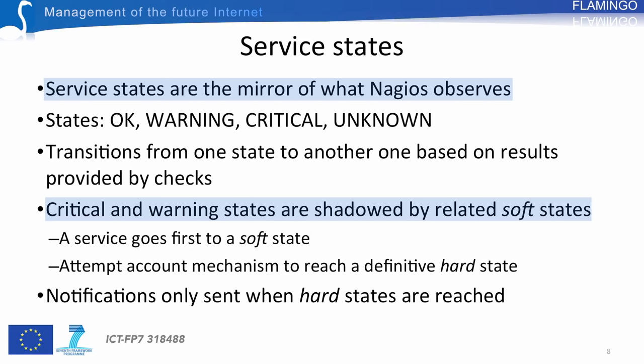This means that several checks are required by the system before considering a service is really in a critical or warning state. So there are two states: a soft state and a hard state. A service goes first to a soft state, and then an attempt count mechanism is used to reach a definitive hard state. Notifications are only sent when hard states — confirmed states — are reached.